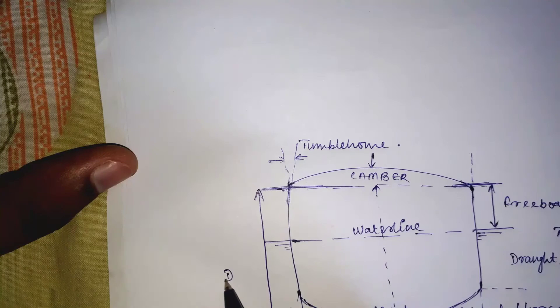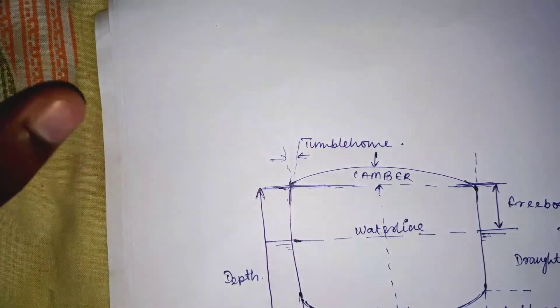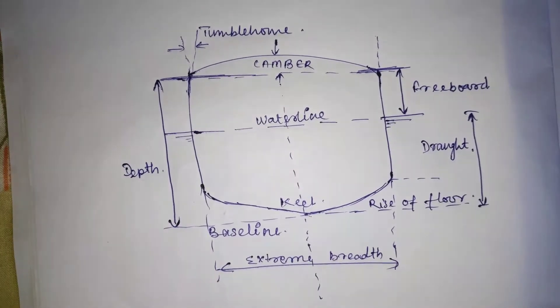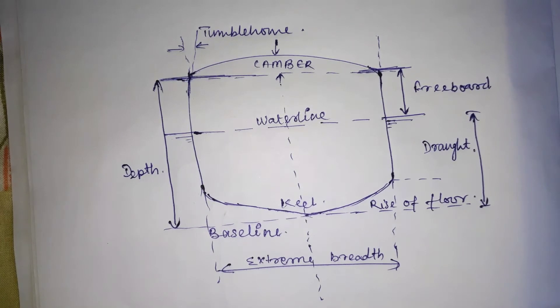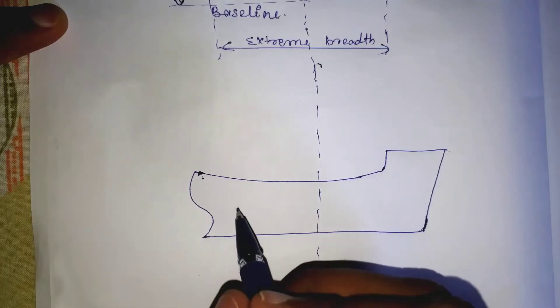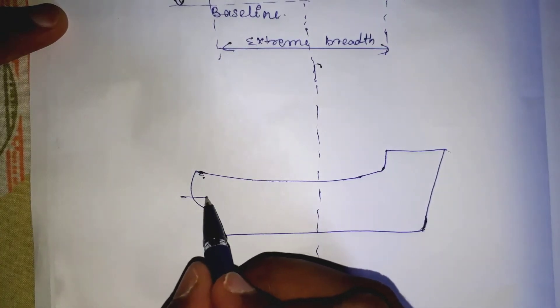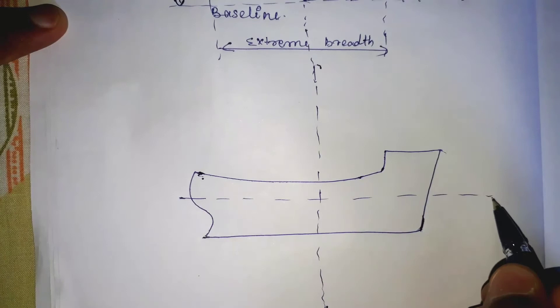Depth of the vessel at the ship's side from the upper deck to the baseline - if it is inside of the ship's plating, it is molded depth, and if it is outside the ship's plating, it is extreme depth. Same goes with the breadth. Breadth is of two types: molded breadth and extreme breadth. If it is inside, it is known as molded breadth